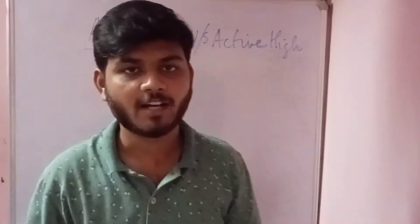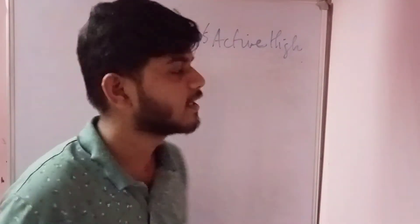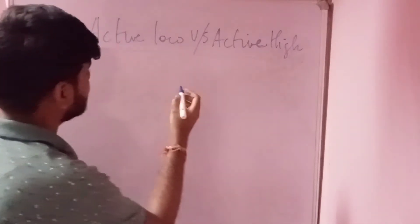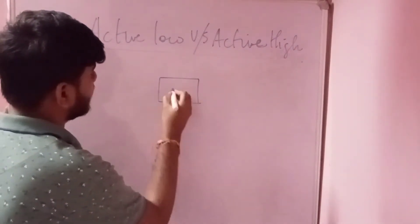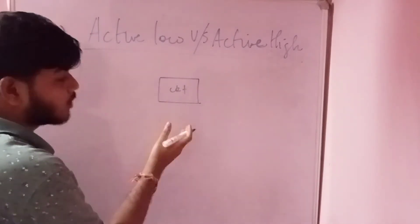Let's look at what is active low and active high. Active low and active high signals are basically - for example, we have any circuit, this can be any circuit. Let's look at that.